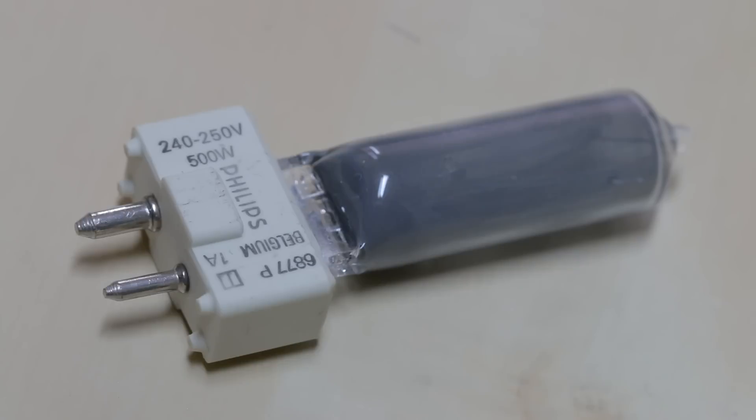I've got this old tungsten halogen lamp. It's used in a Thorn Sunspot footlight, and as you can tell from the color, it's seen quite a lot of use and it finally went pop.